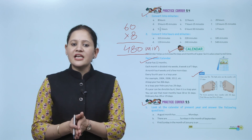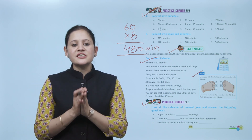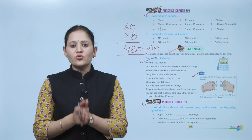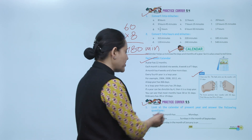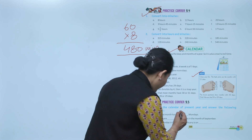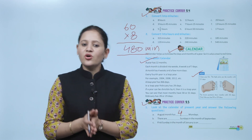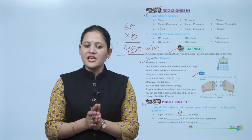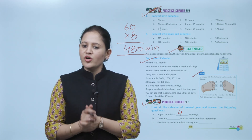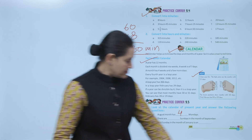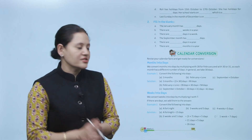Next is Practice Corner 9.5. Look at the calendar of the present year and answer the following questions. This is year 2024 — in August 2024 there are four Mondays. You can check the calendar and find out how many Mondays are in the month of August.